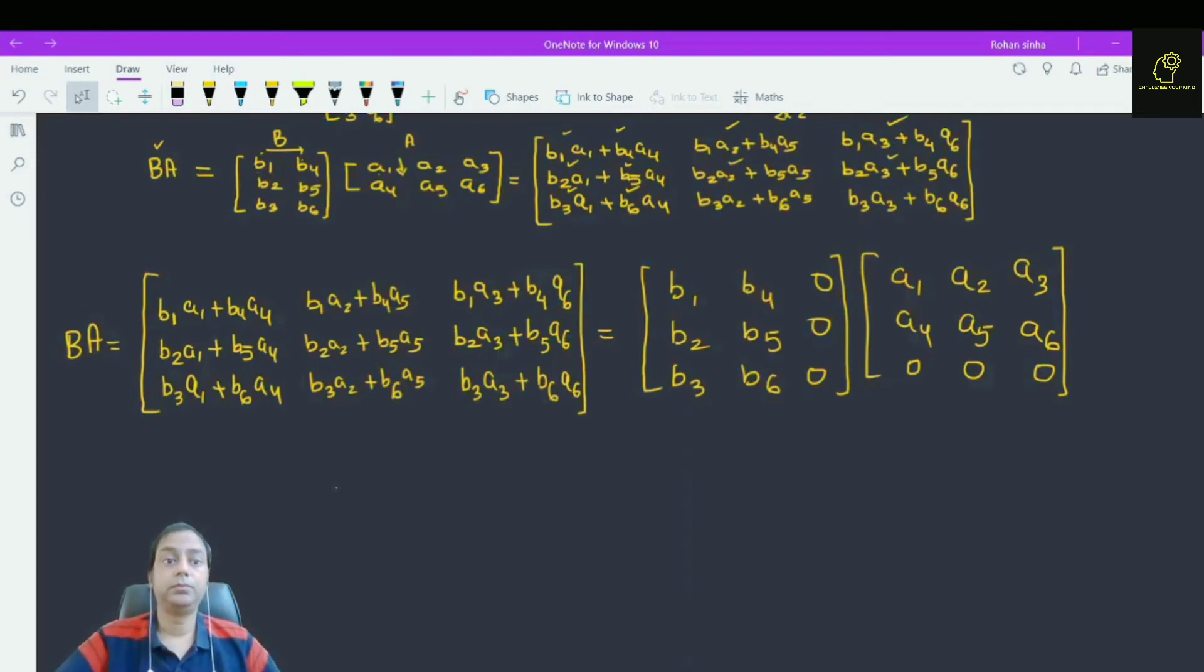Now, this matrix BA can also be represented as a product of these two matrices. This is the key step here.